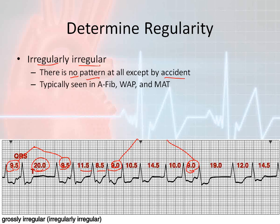Commonly, you will see these types of strips in people that have atrial fibrillation, a wandering atrial pacemaker rhythm, and sometimes multifocal atrial tachycardia. These three types of rhythms we will cover later on in our atrial rhythm presentation.